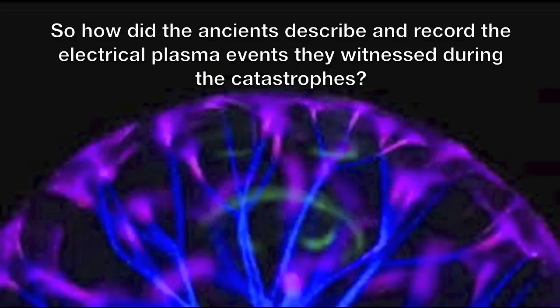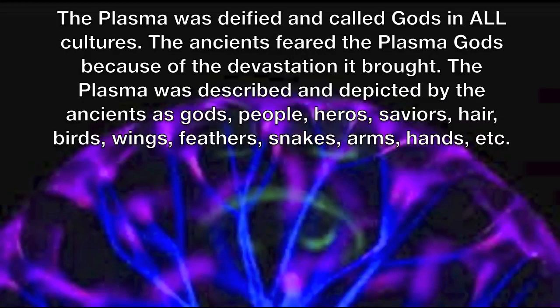So how did the ancients describe and record the electrical plasma events they witnessed during the catastrophes? The plasma was deified and called gods in all cultures. The ancients feared the plasma gods because of the devastation it brought. The plasma was described and depicted by the ancients as gods, people, heroes, saviors, hair, birds, wings, feathers, snakes, arms, hands, etc.